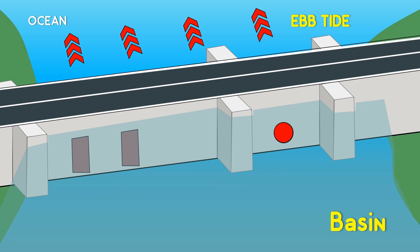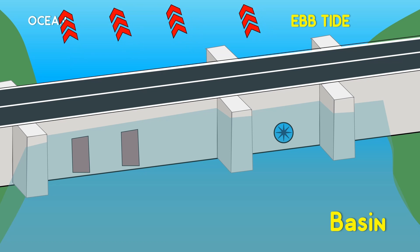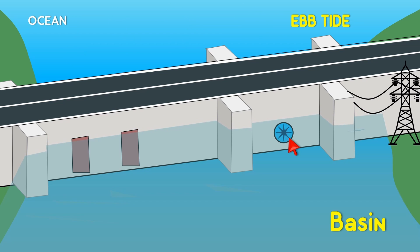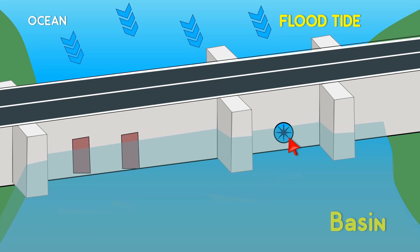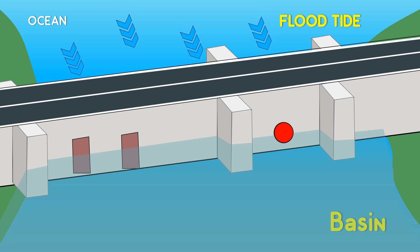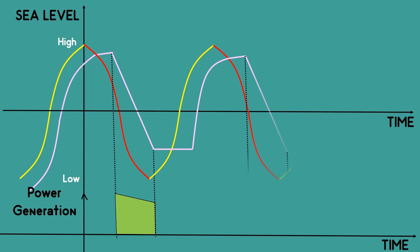So we have to keep the turbine locked until we have a sufficient head to generate electricity. At that time, the turbine is unlocked. As the water flows through the turbine, it spins and the generator generates electricity. Now the basin water level is also decreasing. The electricity is generated until we have sufficient head. When the head becomes insufficient, the turbine should be locked and the sluice gates are opened so that the water can come in through it. This cycle repeats continuously.